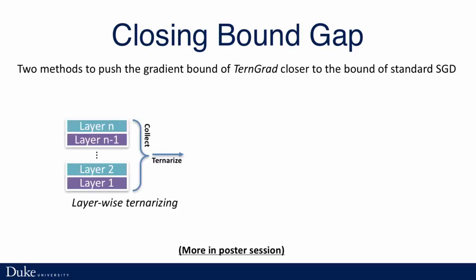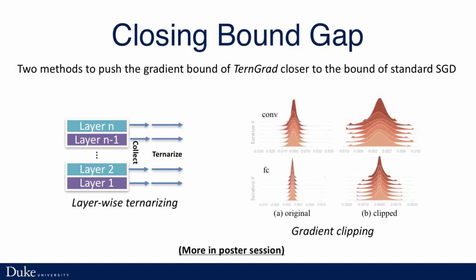First, layer-wise ternarizing. Instead of collecting all gradients in the deep neural network and ternarizing them, we just simply do it layer by layer. Second, gradient clipping. This is different from the one in RNN. In gradient clipping, when the magnitude of the gradient is larger than some standard deviation, we just clip them.